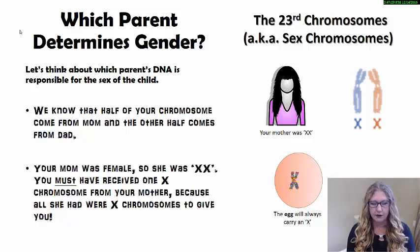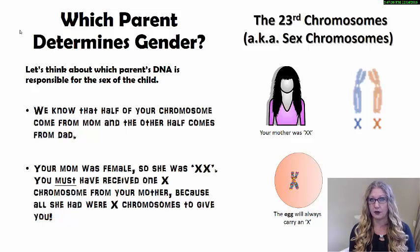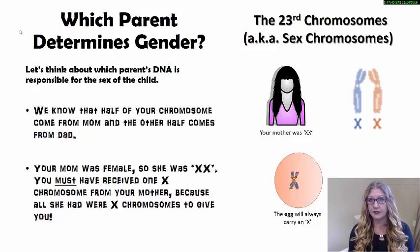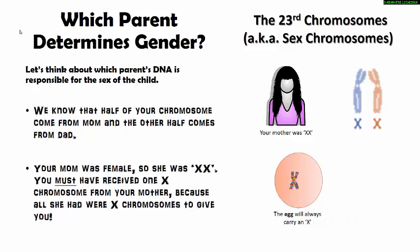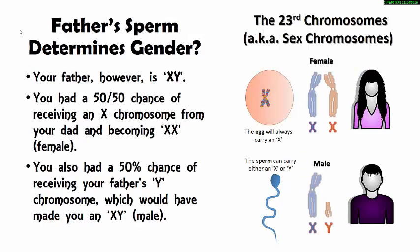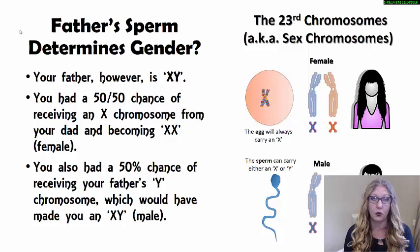Let's think about which parent is dictating what sex the offspring will be. Your mom was female, so she had XX for her 23rd chromosome — meaning you must have received one X from your mother. Your father, on the other hand, could have passed his X chromosome or his Y chromosome, depending on which spermatozoon fertilized the egg that made you. So an egg must always carry an X chromosome. The male would have had a 50-50 chance, so every baby has a 50-50 chance of becoming male or female.